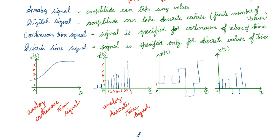In the third plot, the amplitude takes only values of 1, 2, 3, 4, or minus 1 — a finite number of discrete values — so it is a digital signal. Looking at the time axis, the signal exists for all time — it is a continuous time signal. Therefore, this is a digital continuous time signal.